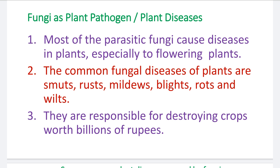There are different types of pathogens in the environment — bacteria, viruses, mycoplasmas, nematodes, and insects — and these pathogens cause a variety of diseases on crop plants. Among these, fungal pathogens are the most severe, causing a lot of diseases compared to all other pathogens. Fungi cause major and tremendous numbers of diseases in plants.